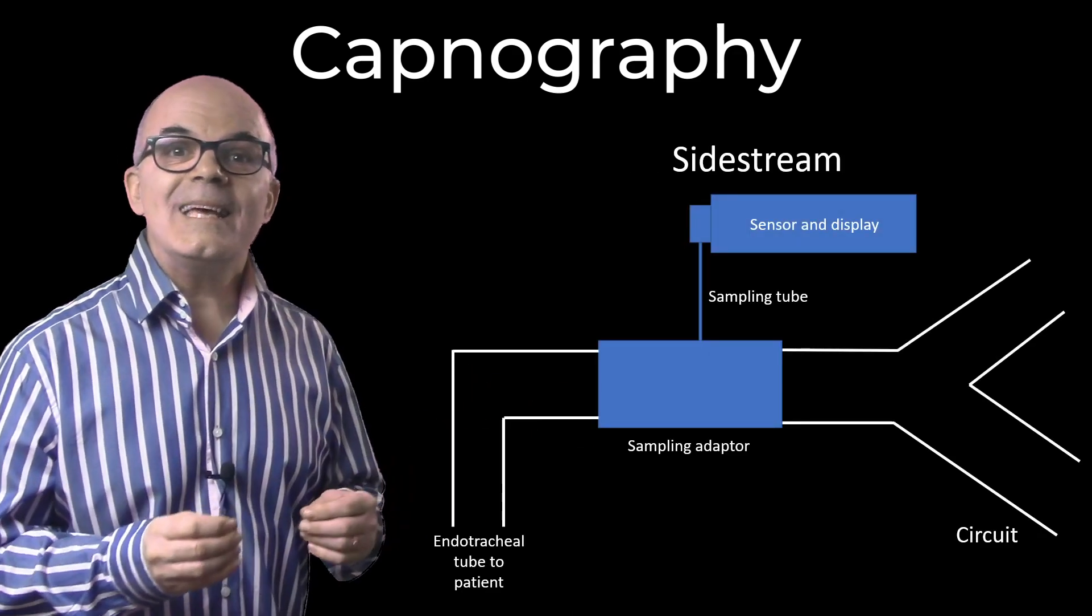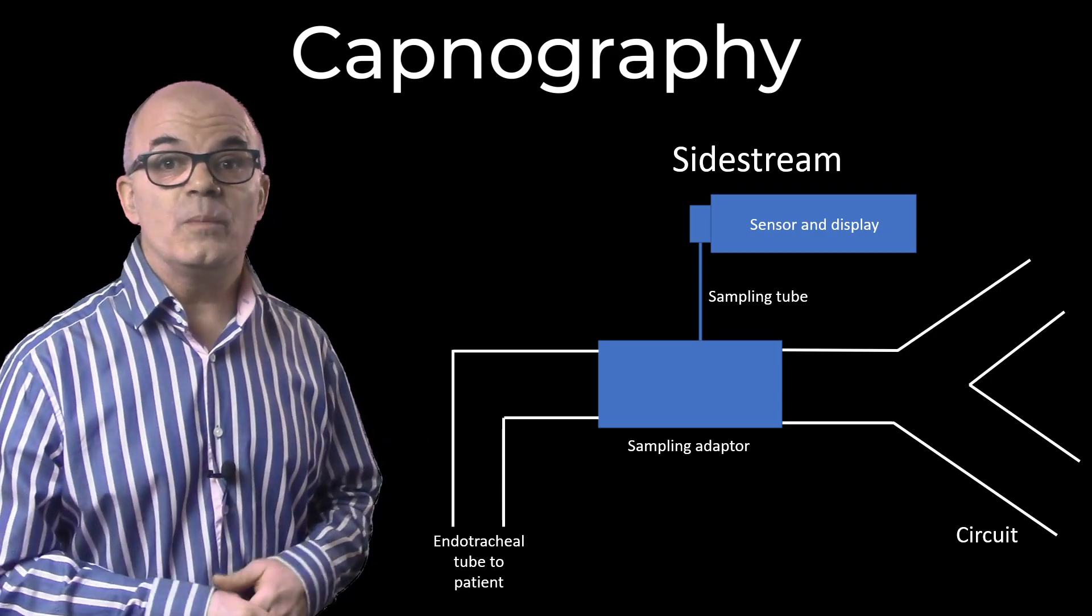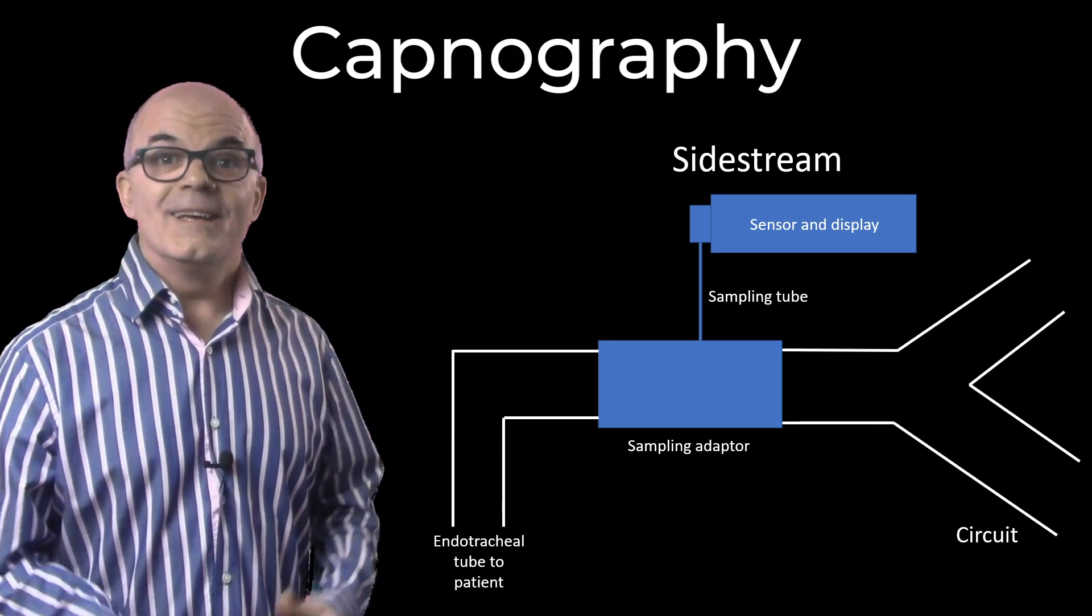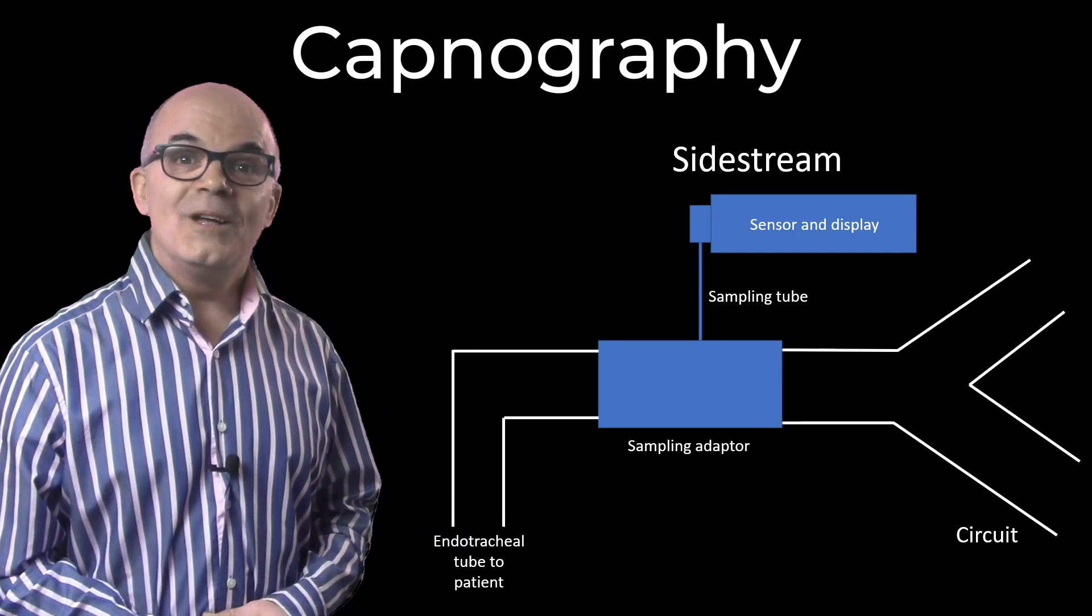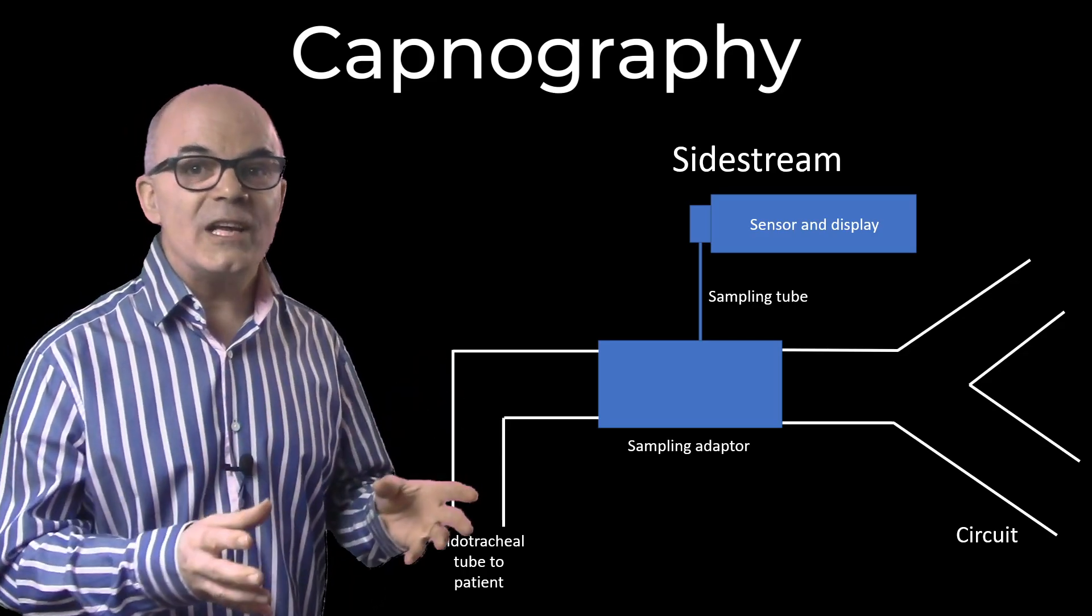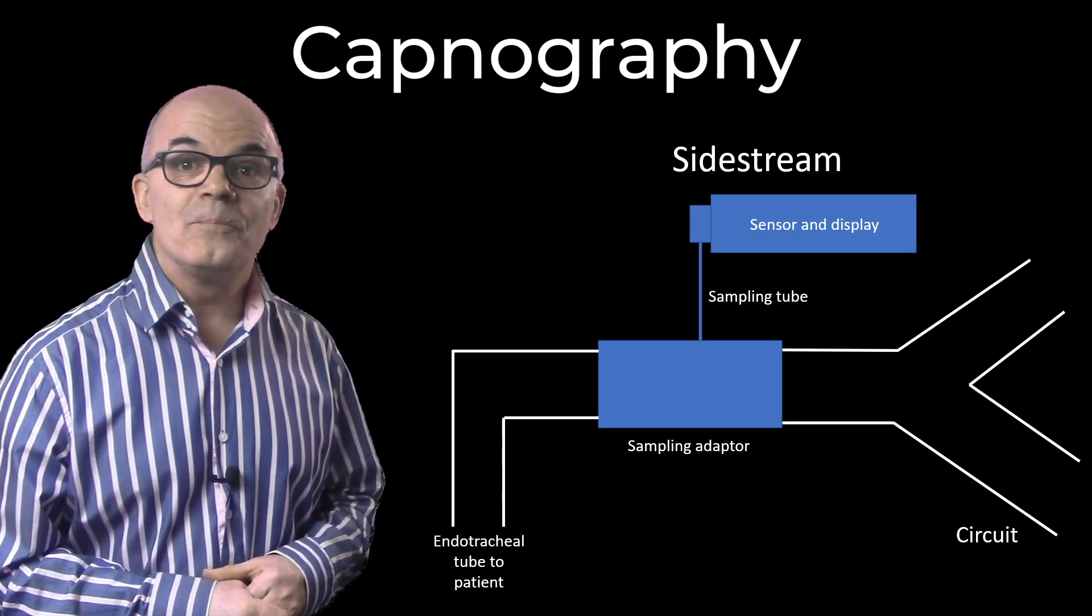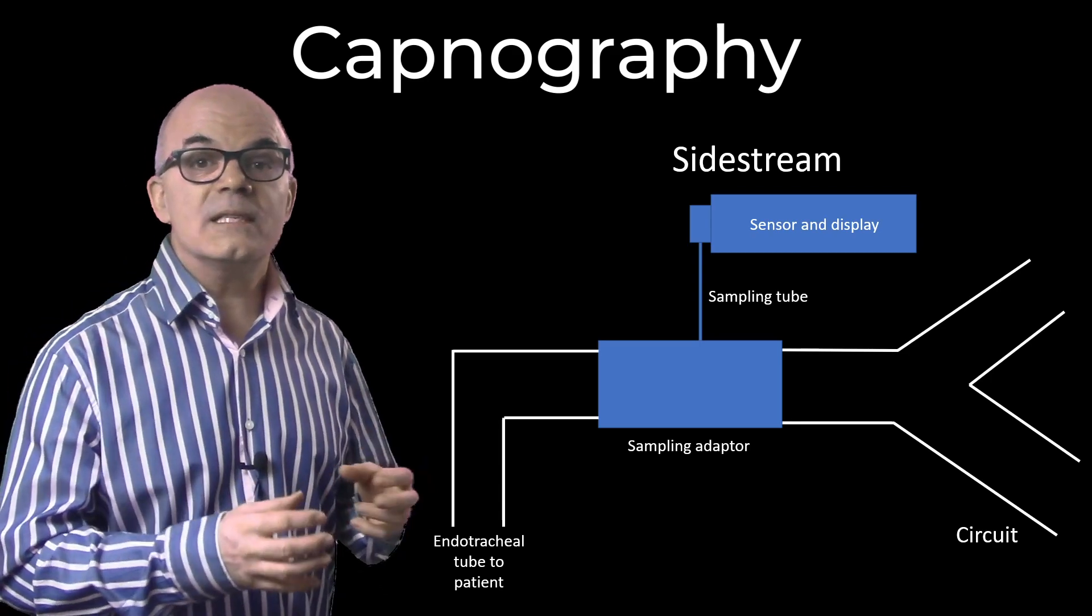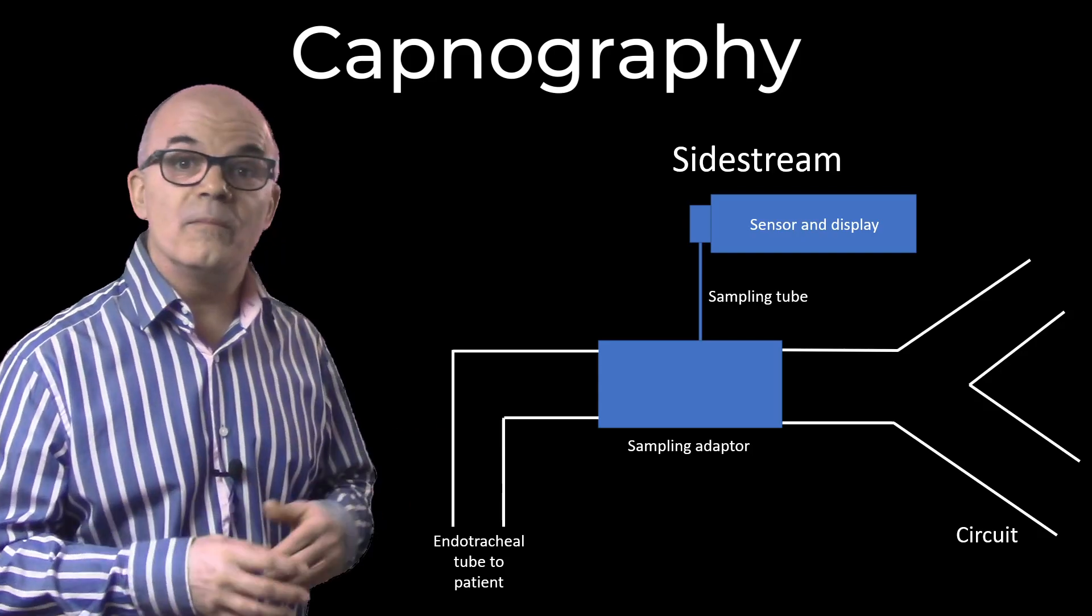Sidestream. The detector is now remote from the patient and attached to a short piece of tubing, which is then connected to the endotracheal tube via capillary tube. The gas is then taken to the detector via this capillary tube. Although less bulky than the mainstream, it does mean a slight delay between changes in the patient's expired CO2 and this being reflected on the monitor. They also include the need for a suction pump to draw the sample into the measurement chamber, and there can be inaccuracies caused by suction pump function.